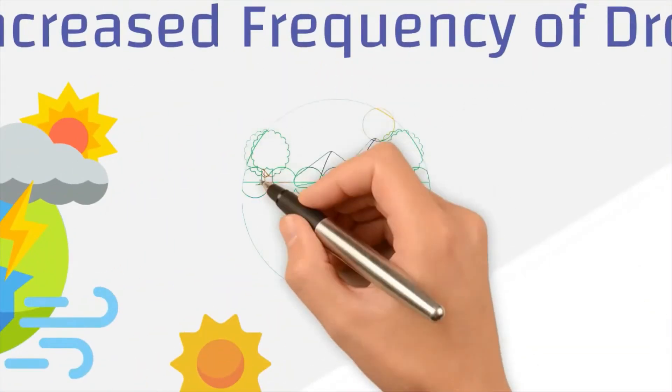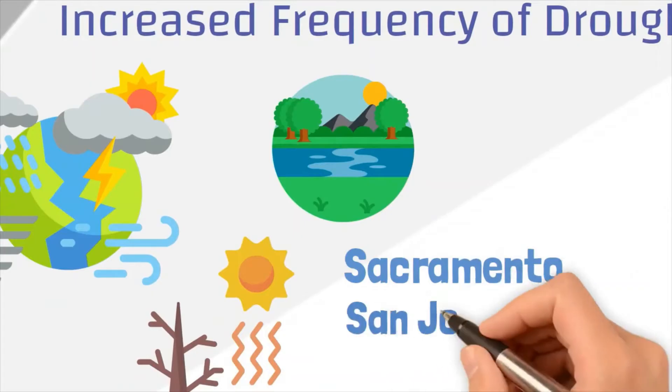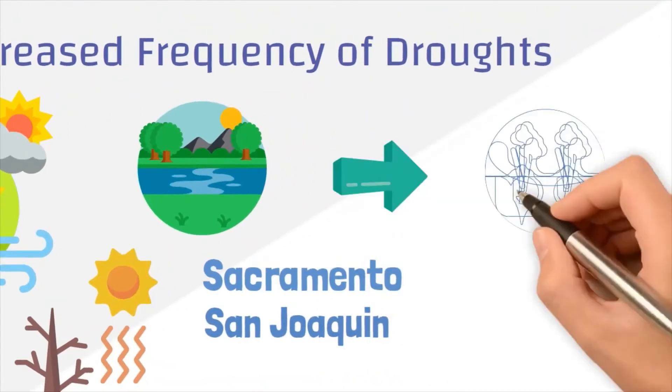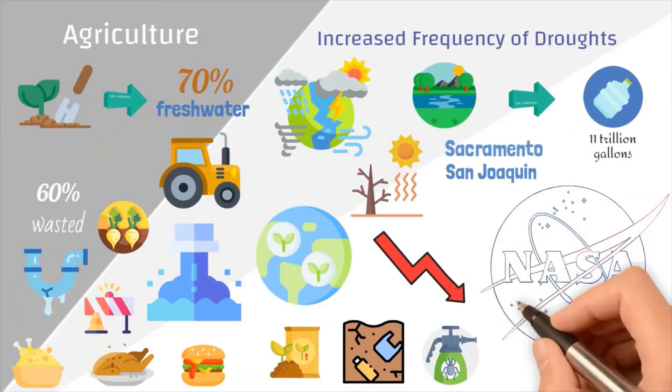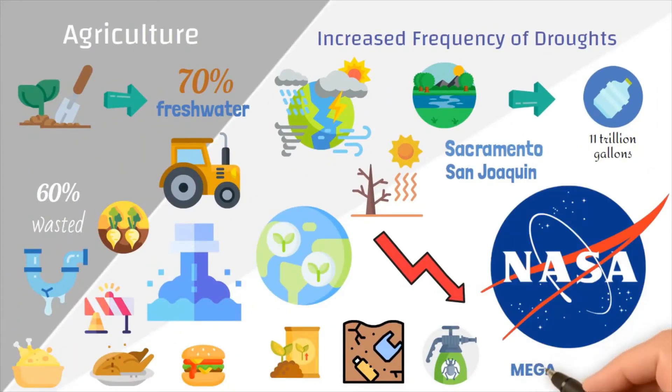The historic drought in California has depleted the Sacramento and San Joaquin River basins by an estimated 11 trillion gallons below normal seasonal levels. According to modeling by NASA, there is a high likelihood of mega droughts in the 21st century, which can span multiple decades.